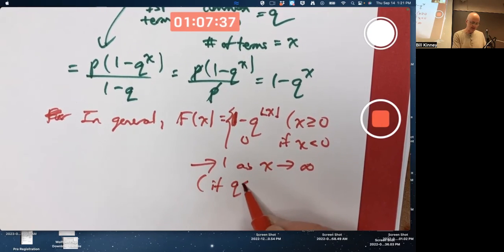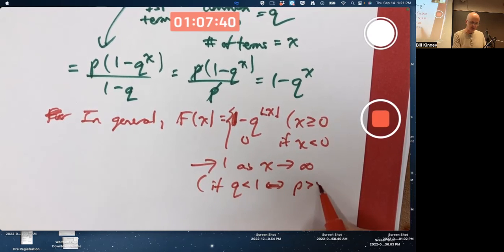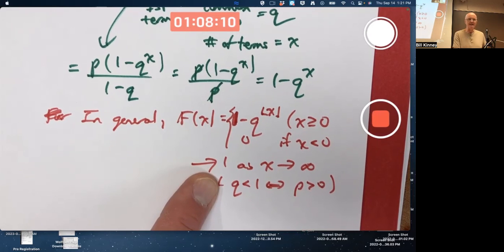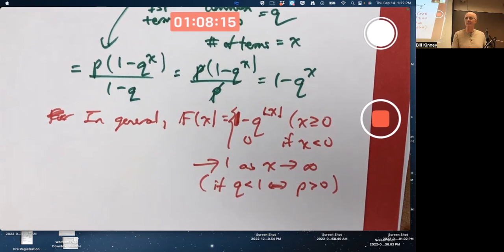You wouldn't really do this kind of example if P were zero though. Flip a coin and your probability of heads is zero - you wouldn't really do that. So we usually do assume P is positive, and therefore Q is less than one. I guess for most applications, P would also be less than one, therefore Q would be positive. And because of that going to one as X goes to infinity, that's enough to say yes, this is a valid probability distribution.